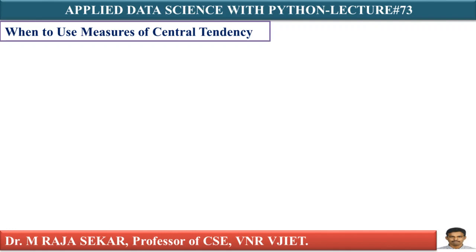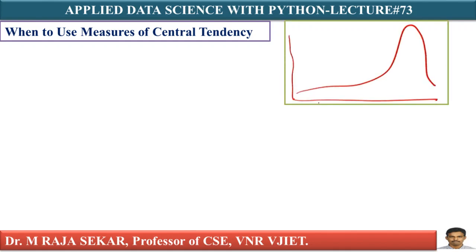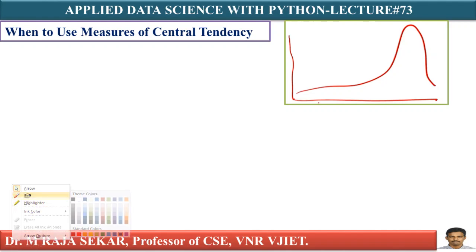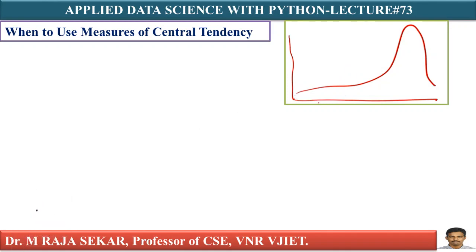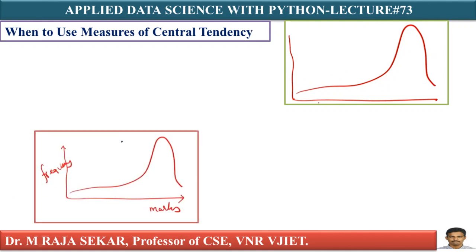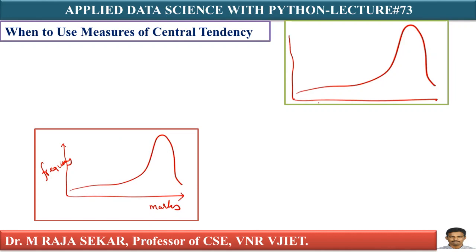When to use mean, median, and mode. For example, look at this data set. If you observe carefully, this data set is left-skewed data. The reason is the tail is on the left-hand side. This tail is on the left-hand side, therefore it is left-skewed data. This is the case in which the question paper is very easy.